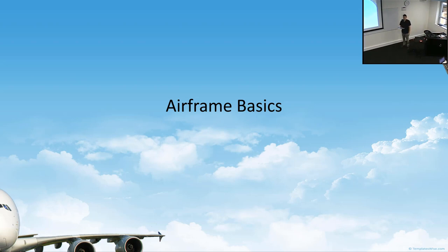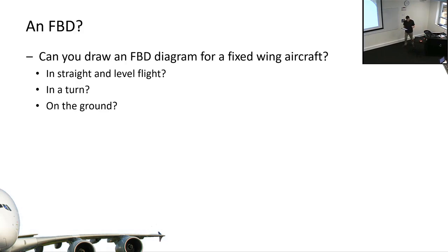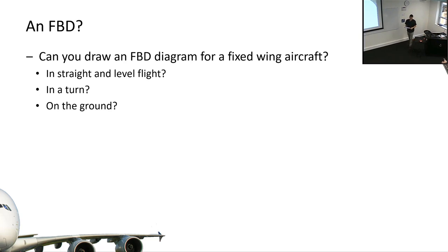This lecture gives you the first insight into how that works. It's fairly interactive - I need you to get a pen and paper or some kind of drawing tablet out. I want you to draw a free body diagram for a fixed-wing aircraft in straight level flight, in a turn, in a level banked turn, and on the ground. Make whatever assumptions you like and have a go at drawing what you think I'm expecting.